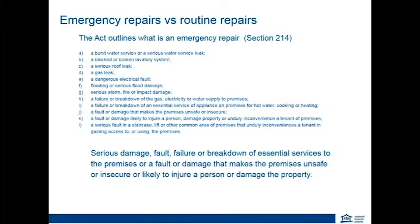The Act outlines what is an emergency repair under section 214. Without reading every item listed, it is deemed to be a serious fault, damage, or failure or breakdown of essential services to the premises. It could be a fault or damage that makes the premises unsafe or insecure or likely to injure a person. Examples might include the toilet or hot water system not working, a burst pipe causing flooding, or a serious gas leak. A common sense approach is usually required — ask yourself: what happens if I don't attend to this immediately? Does this problem fall into what is listed in the legislation as an emergency repair? The security, health, and safety of the people living there should also be taken into account.